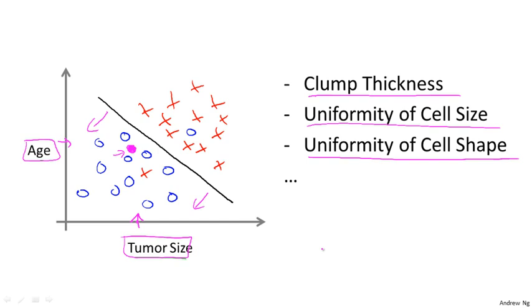So just to recap, in this class we'll talk about supervised learning, and the idea is that in supervised learning, in every example in our dataset, we are told what is the quote correct answer that we would have quite liked the algorithm to have predicted on that example, such as the price of the house or whether a tumor is malignant or benign. We also talked about the regression problem, and by regression that means that our goal is to predict a continuous value output, and we talked about the classification problem, where the goal is to predict a discrete value output.